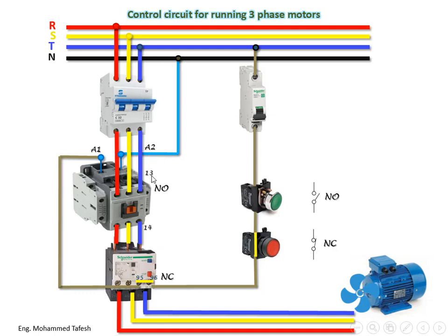Contact points 13 and 14 of the contactor are always open and will be used in this circuit. This is how we finish connecting the power circuit and the control circuit. We will now see how to operate it — consider that you have connected these components in an electrical panel and you want to turn them on and check them.